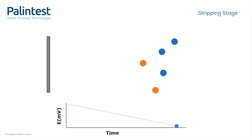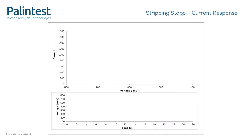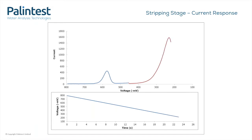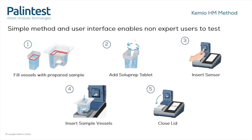We can see an animation of exactly what is happening inside the Chemio Heavy Metals instrument here. You can see the voltage is changing and there's a current change as things jump off it. The method is still easy to do.